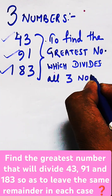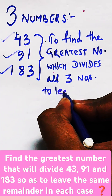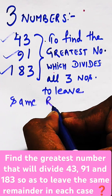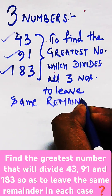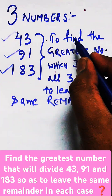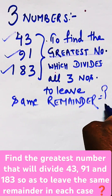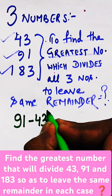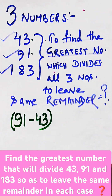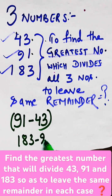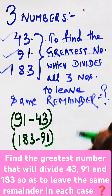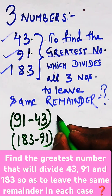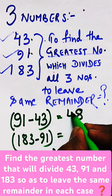To solve such questions, just subtract one number from the second one, the second number from the third one, and the third number from the first one. This is the method to solve such questions — when we subtract these numbers mutually from each other.